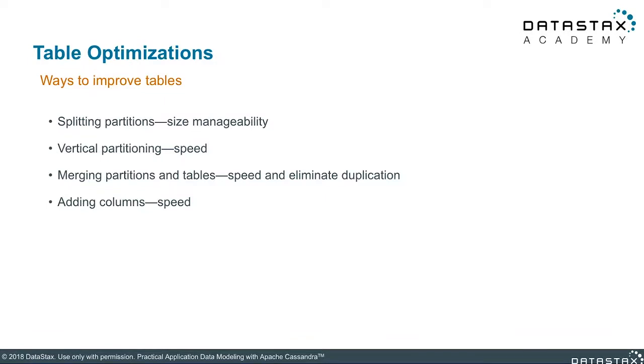Let's now take a look at some different techniques that can be used to optimize a table. There are several characteristics we can optimize for, such as the speed of reading partitions, managing the size of the partitions, or even reducing the complexity of maintaining the data in the table in comparison to other tables.